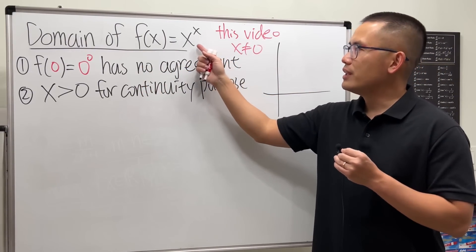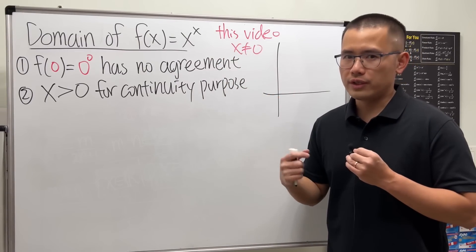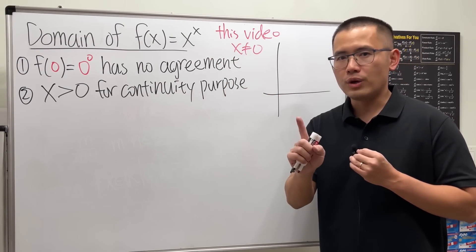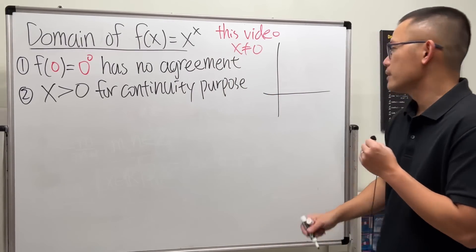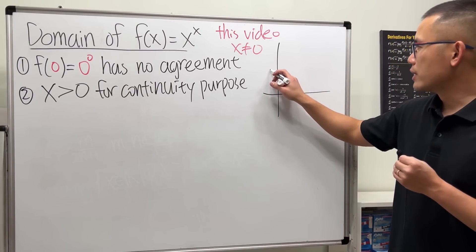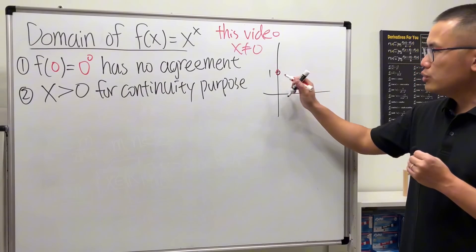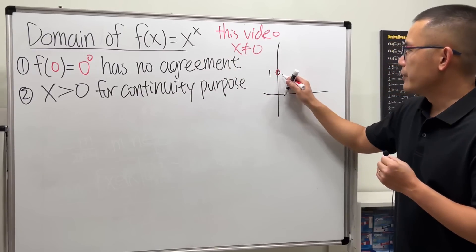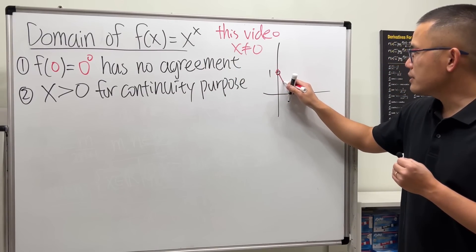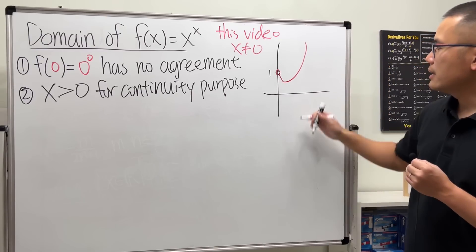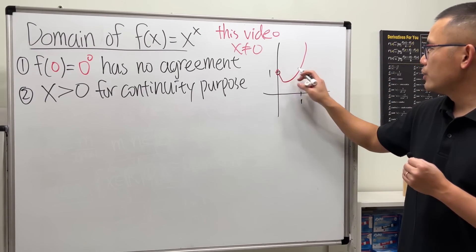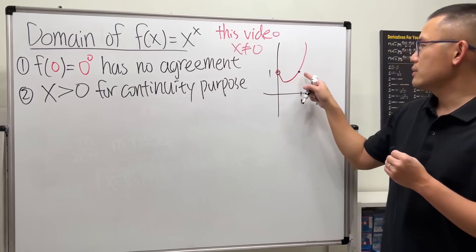If you graph this, 0^0 doesn't work—no agreement. But if you take the limit as x approaches zero from the right-hand side, the limit equals one; everybody can agree on that. So this is one, and I'll put an open circle because x is not equal to zero. The interesting part is that this function actually goes down a little bit first and then comes back up. When x equals one, you have 1^1, so it's just one.